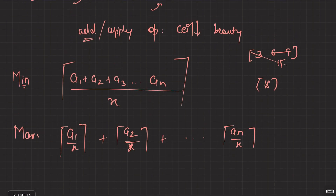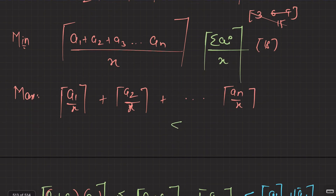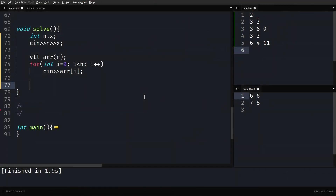So the question is done and dusted here. The minimum beauty is simply ceil(sum(ai) / x), and the maximum beauty — don't do anything — it is the summation of ceil(ai / x). Here I just take the summation divided by x; there I just add up the individual ceils. That's all about this question. Let's quickly code it up.